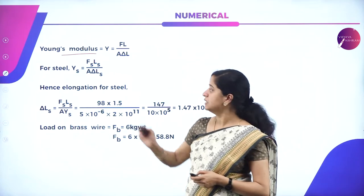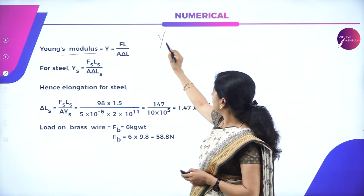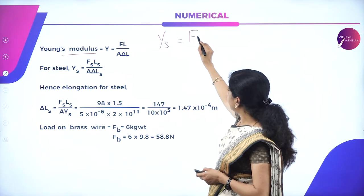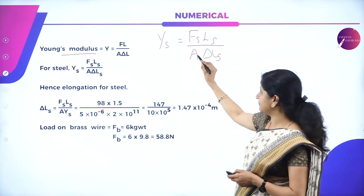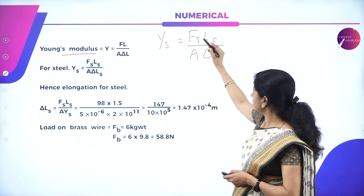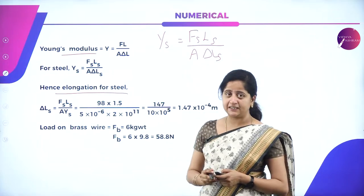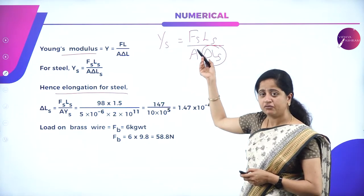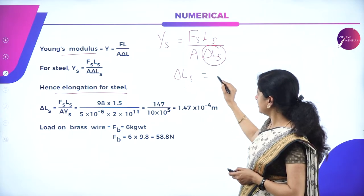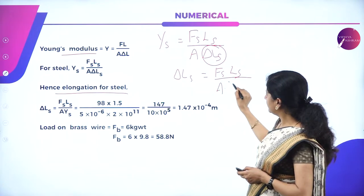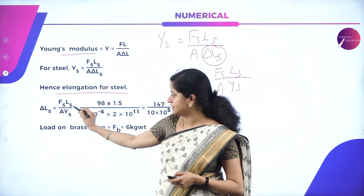We know the formula for Young's modulus: Y = FL / (A × delta L). For steel: Y_S = (F_S × L_S) / (A × delta L_S). Since we have to find the elongation, rearranging gives delta L_S = (F_S × L_S) / (A × Y_S).